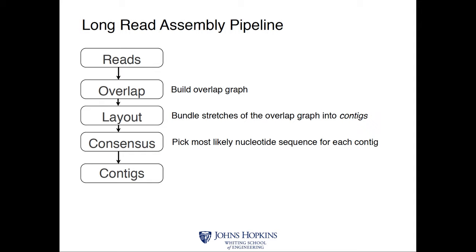Methods for Illumina data don't work for these long error-prone reads and vice versa. Key characteristics of Illumina data: very high accuracy, cheap, so you can sequence to very high coverage — but the short read length limits how well we can resolve repetitive regions. The key computational challenge for long reads is overcoming a high error rate; for short reads it's efficiently assembling incredibly large numbers of reads and dealing with repeats. I'm going to talk about two types of assembler. Long read assemblers follow a classical method called overlap-layout-consensus assembly.